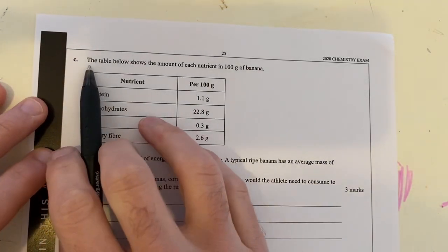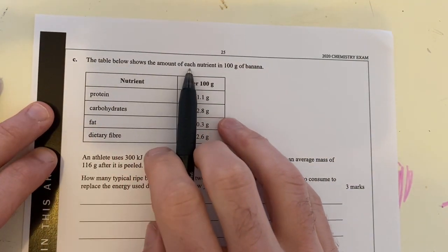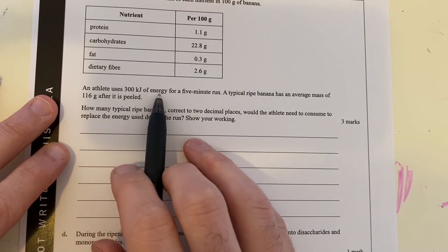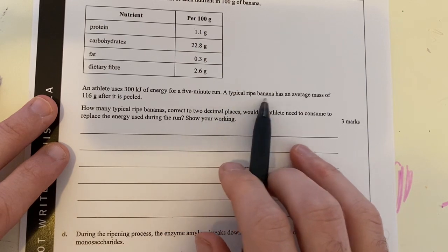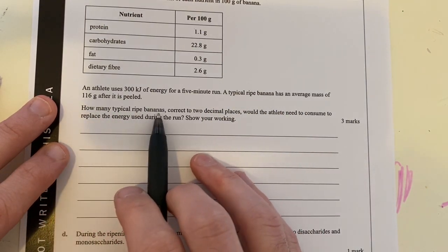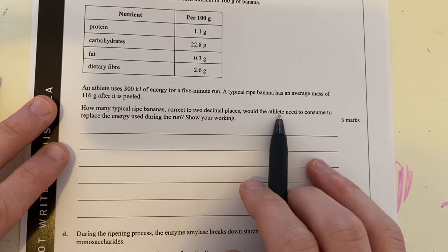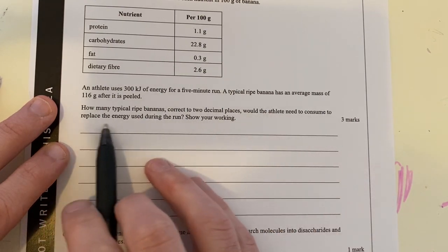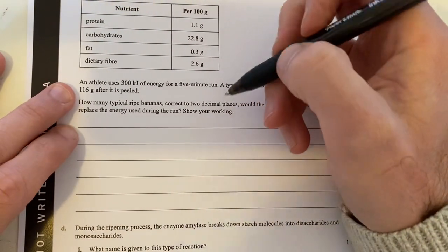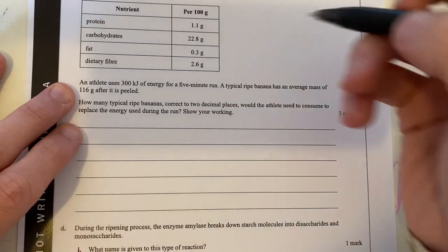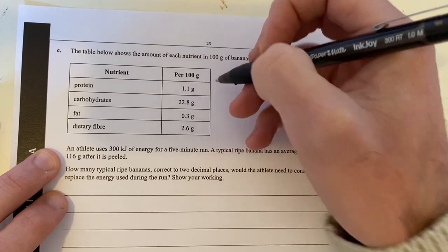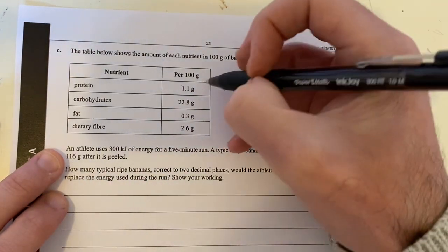Now we're up to speed. Part C: the table below shows the amount of each nutrient in 100 grams of banana. An athlete uses 300 kilojoules of energy for a five-minute run. A typical ripe banana has an average mass of 116 grams after it's peeled. How many ripe bananas correct to two decimal places would the athlete need to consume to replace energy lost during the run? Let's work out how much energy is present per 100 grams and scale it up.